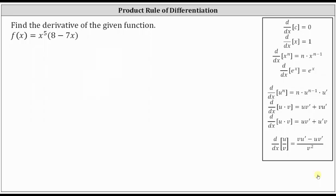We're asked to find the derivative of the given function. We have f of x equals x to the fifth times the quantity eight minus seven x. Because we have a product here, we can determine the derivative using the product rule, or we can distribute x to the fifth and then find the derivative using the power rule. Let's take a look at both methods.